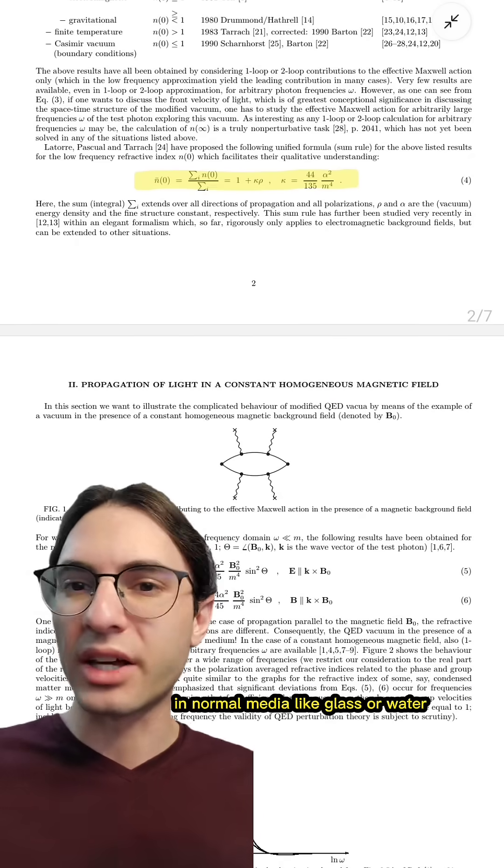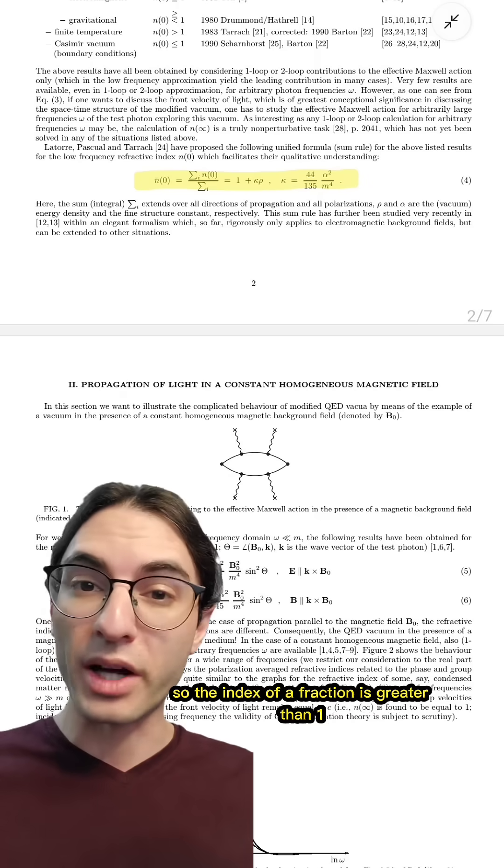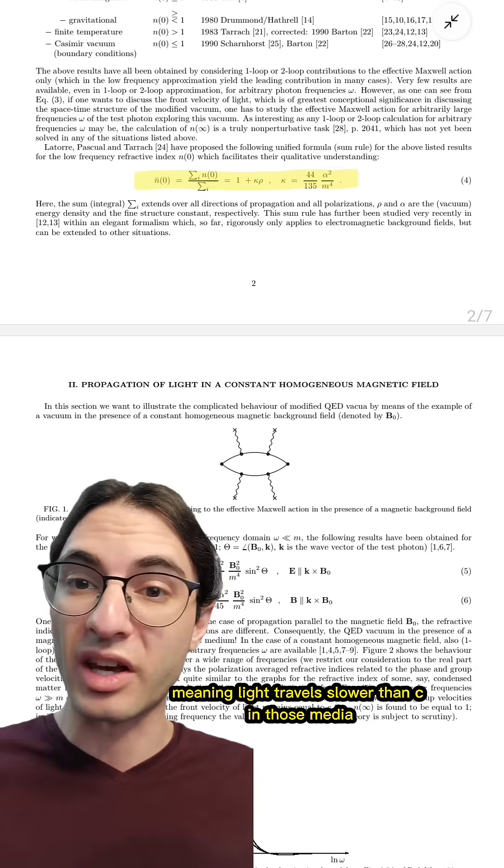This sort of checks out. In normal media, like glass or water, the energy density is positive, so the index of refraction is greater than one, meaning light travels slower than C in those media.